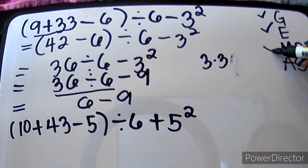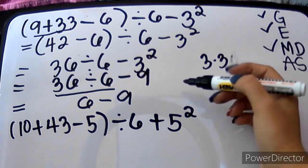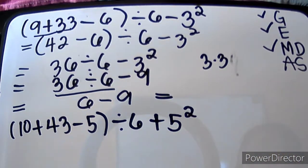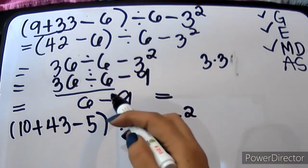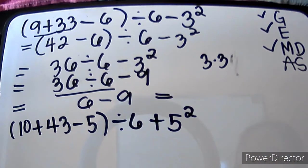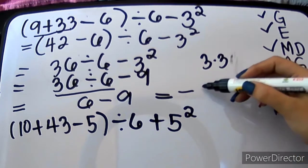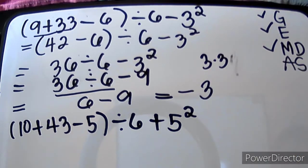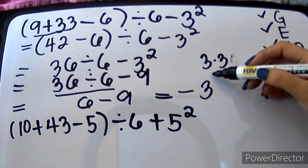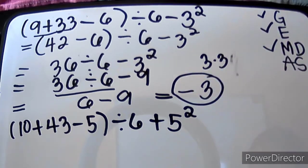So, we will be dividing first — 36 divided by 6 will give us 6. We're done with M or D as they appear from left to right, and we only have one operation. So, dito ko nalang isusulat yung final answer. 6 minus 9 — and as you can see, mas malaki yung 9. Parang 6 pesos lang ang meron ka, but you need to pay 9 pesos, so magkakaroon ka ng 3 pesos na utang. That's why our answer is negative 3.